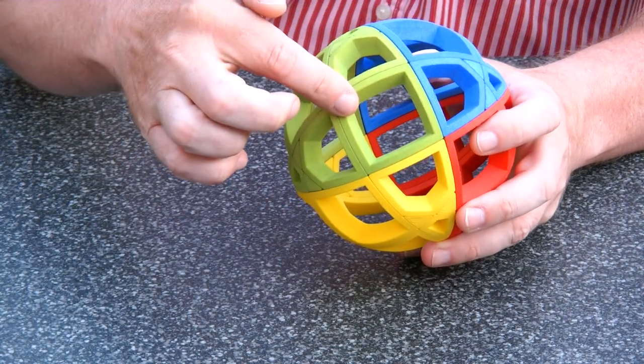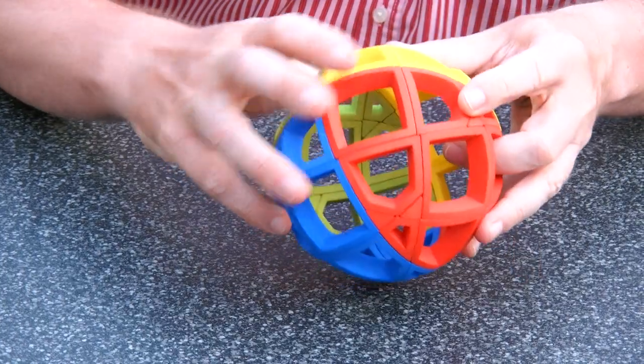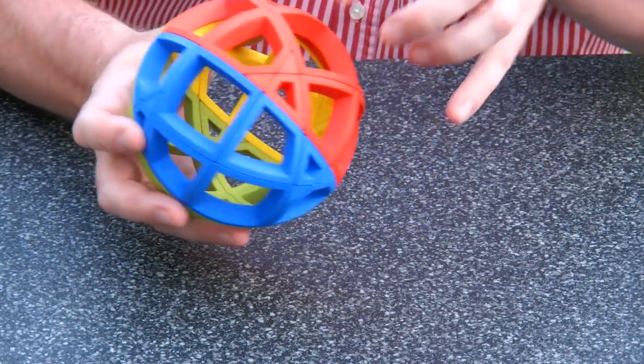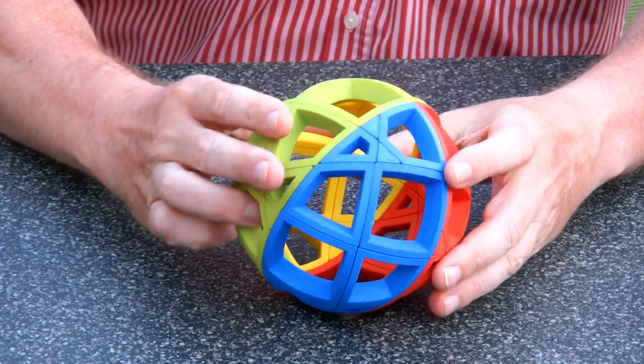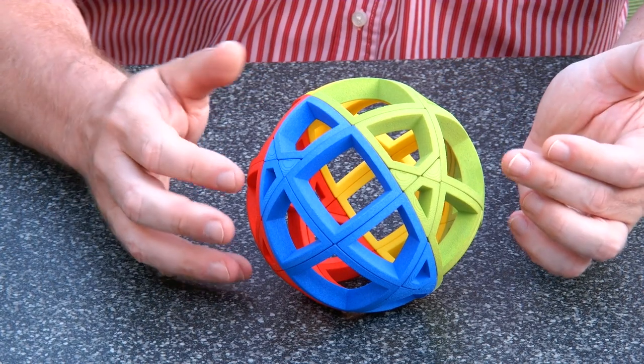As you can see, we have several square pieces: one, two, three, four, five, six, seven, eight, nine, ten. So I found this geometry with 10 squares.